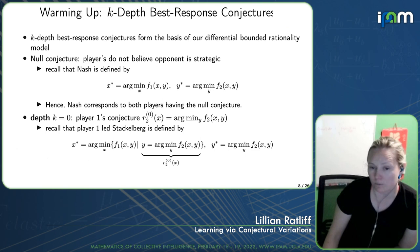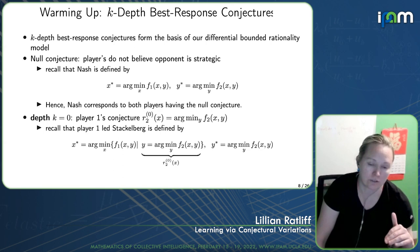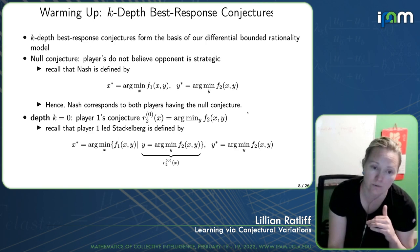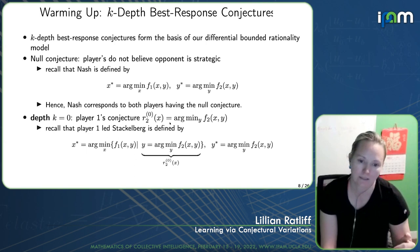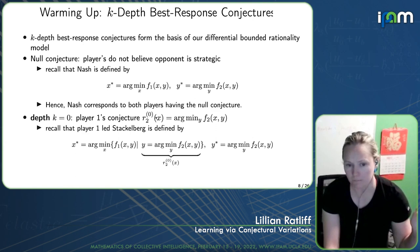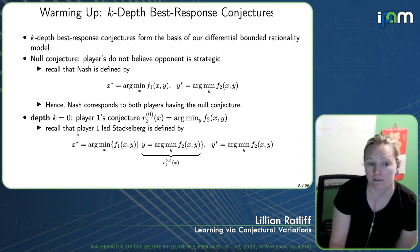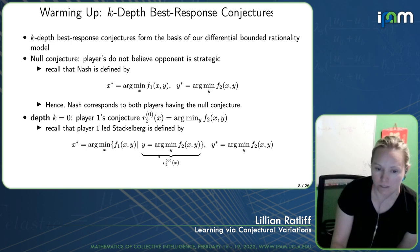To relate this back to familiar equilibrium concepts: at the base level — the null conjecture level — players do not believe their opponents are strategic, and they simply play a best response, leading to the standard Nash equilibrium definition. If we allow one player to reason at what we call k equals zero — it conjectures its opponent will do a best response — then we end up with a Stackelberg equilibrium, where player one is the leader and player two is the follower. Player two simply plays a best response assuming nothing about player one, and player one plays a best response given it believes player two will do a best response.